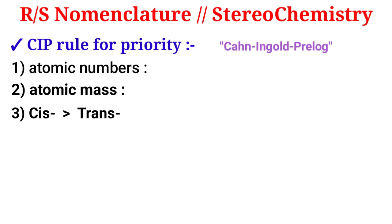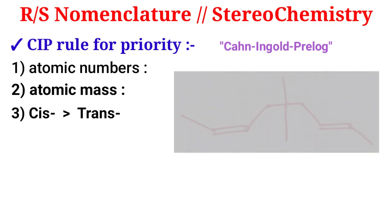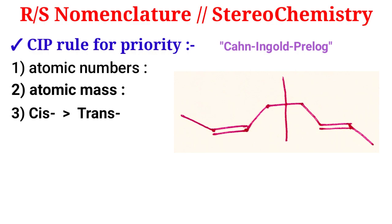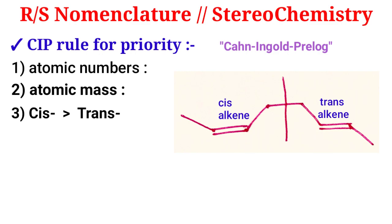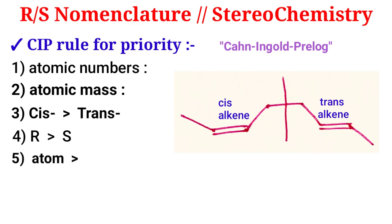Rule number three: cis configuration has higher priority order than trans configuration. Here is an example — this alkene is cis configuration and this alkene is trans configuration, so cis gets higher priority than trans. Rule number four: R configuration has higher priority order than S configuration, which we will discuss later.